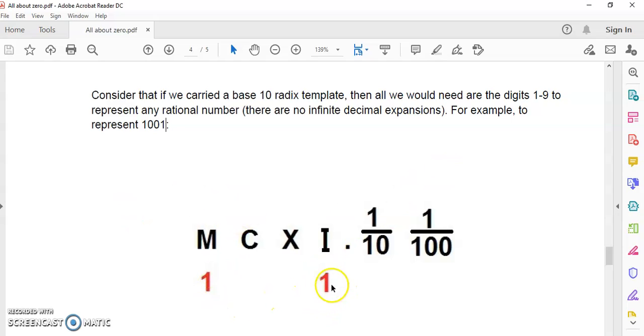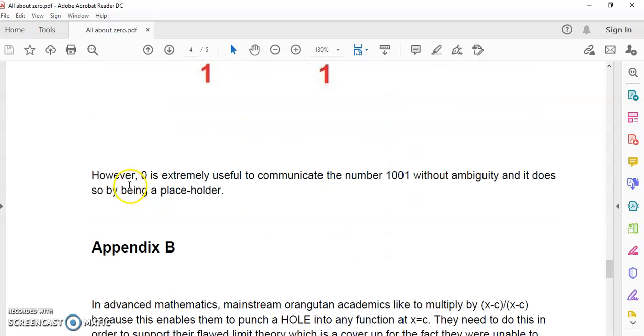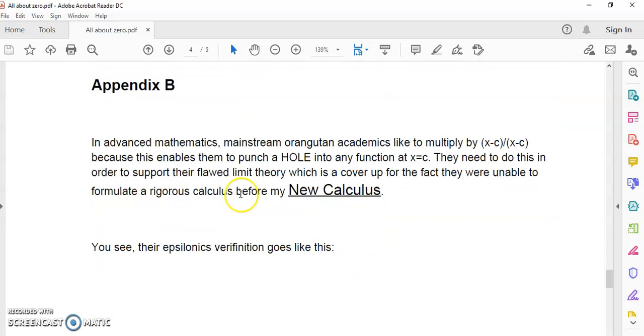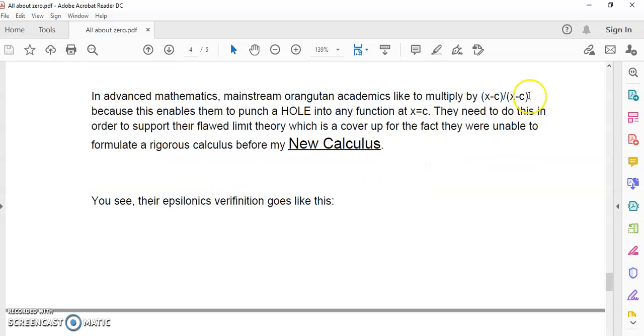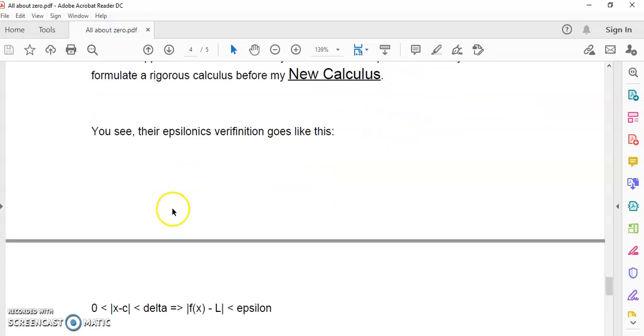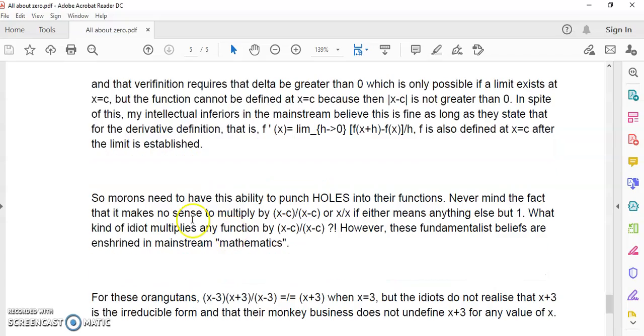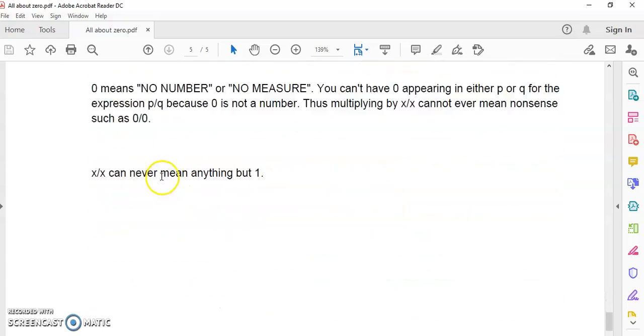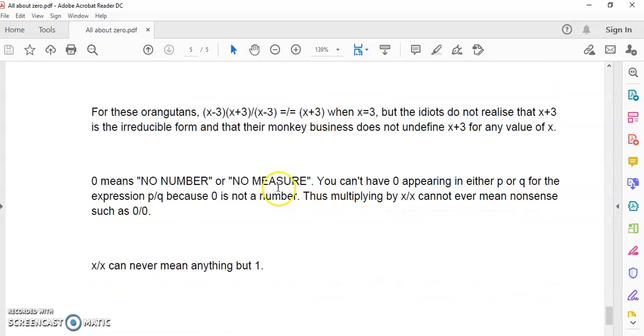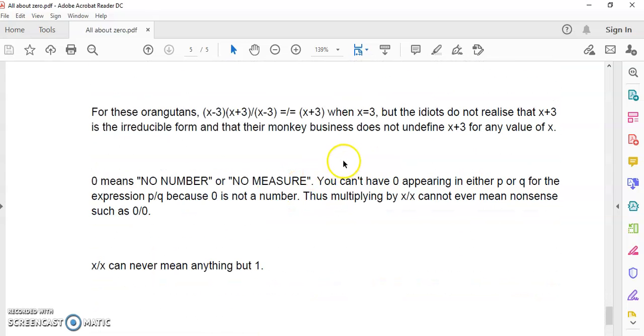And so for example, to represent what we talk about as a thousand and one, we'd only need to write down two ones in the thousands and the units column. See? No use of zero anywhere. So but we don't carry around a template. So if we just wrote one, one, it could mean 11, it could mean 11 million, it could mean 0.11. So that's where zero comes in very handy, and the radix point. So in advanced mathematics, mainstream orangutans like to multiply by x minus c of x minus c, and they need this because their bogus calculus doesn't work without it. So you can read the rest of the details in this article, which I'll place a link to in the detail section of the video.